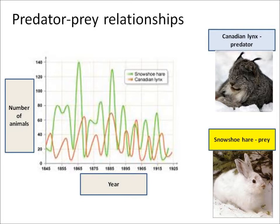If we have a look at the graph, we can see that the population of the predator and the population of the prey — it doesn't stay the same. It goes up a bit and it goes down a bit. We call these changes fluctuations in their population.